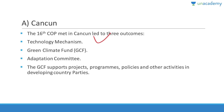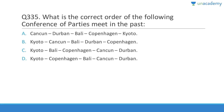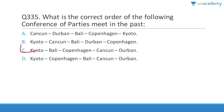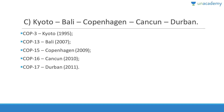Question 335: The correct chronological order of COP meetings is Kyoto (1997), Bali (2007), Copenhagen (2009), Cancun (2010), and Durban (2011). Answer is C.